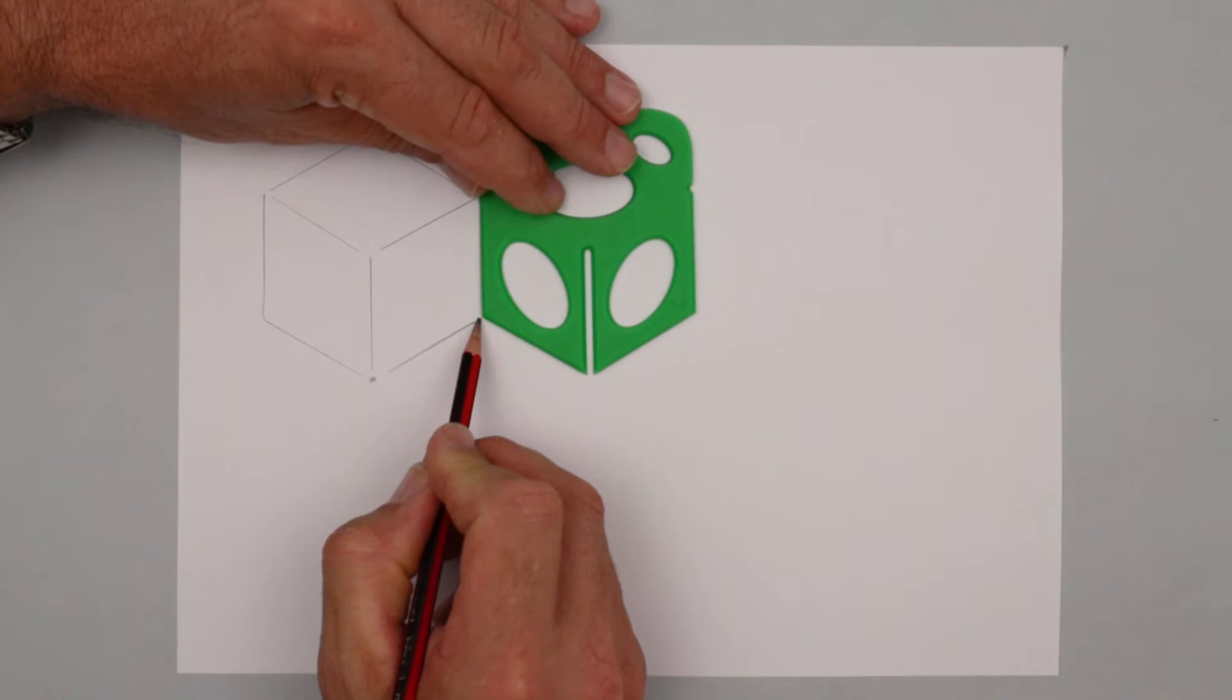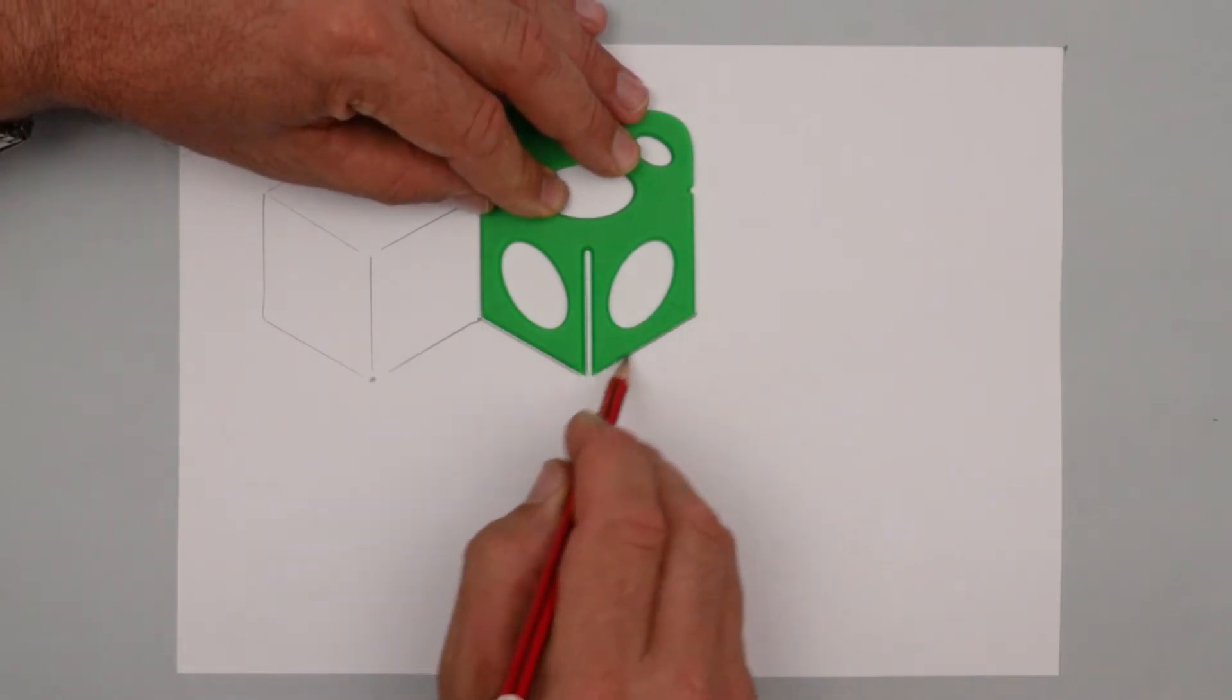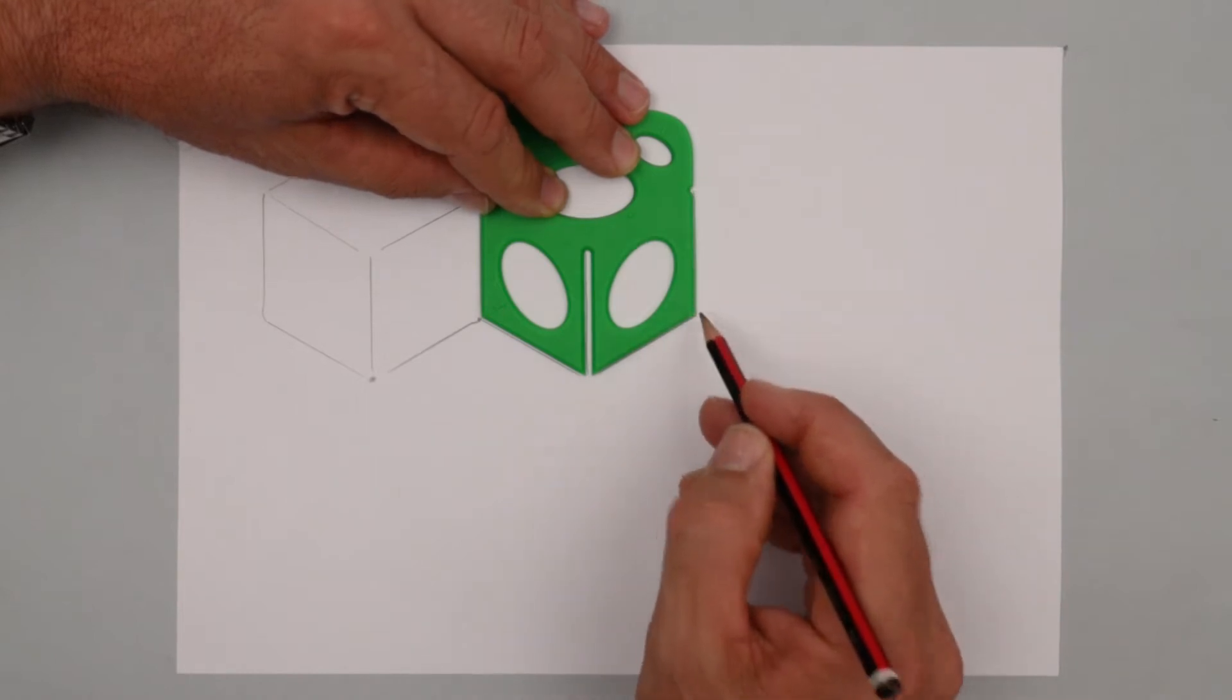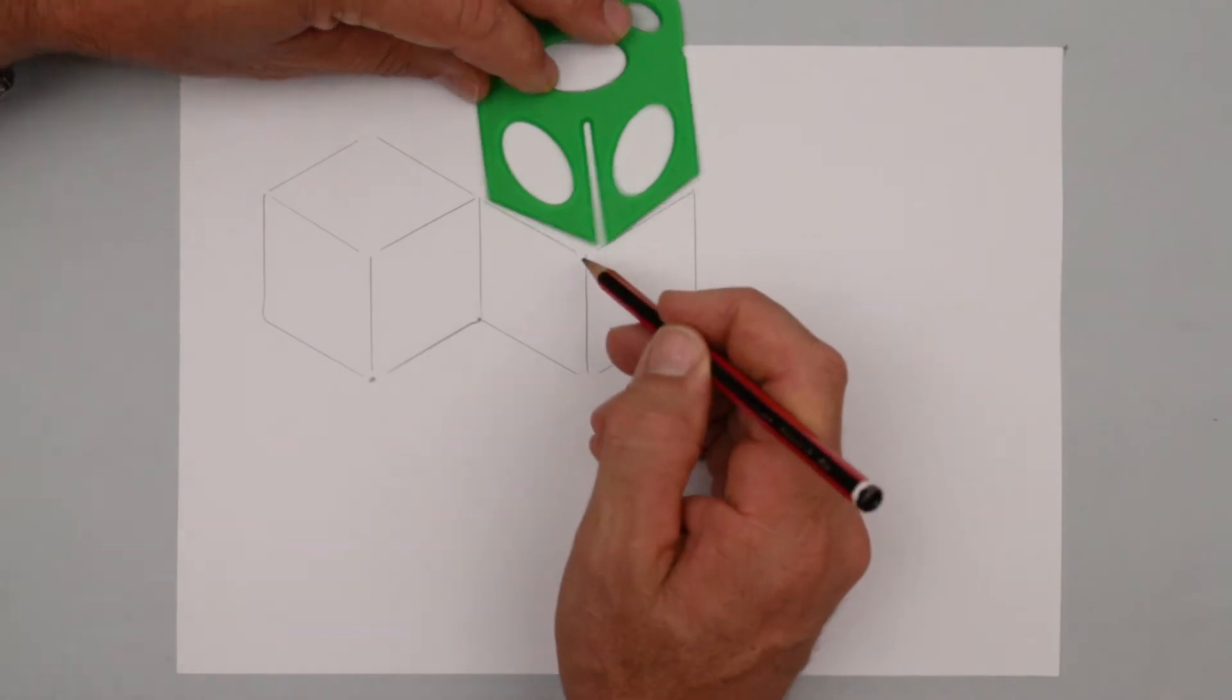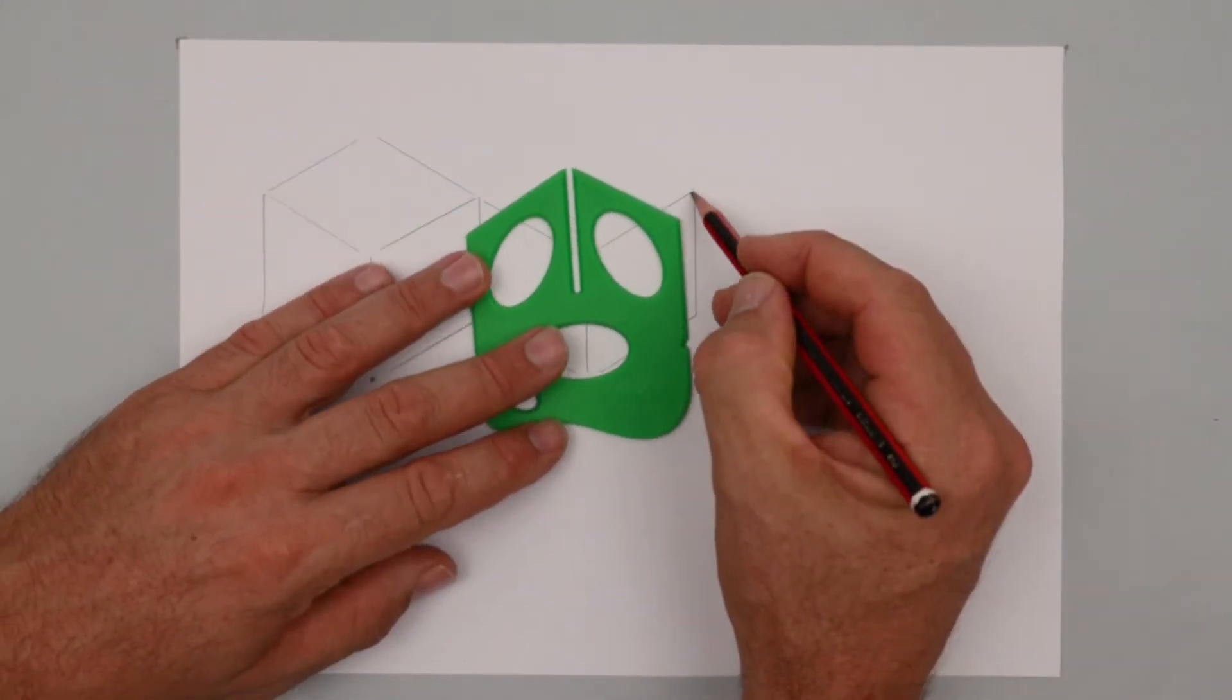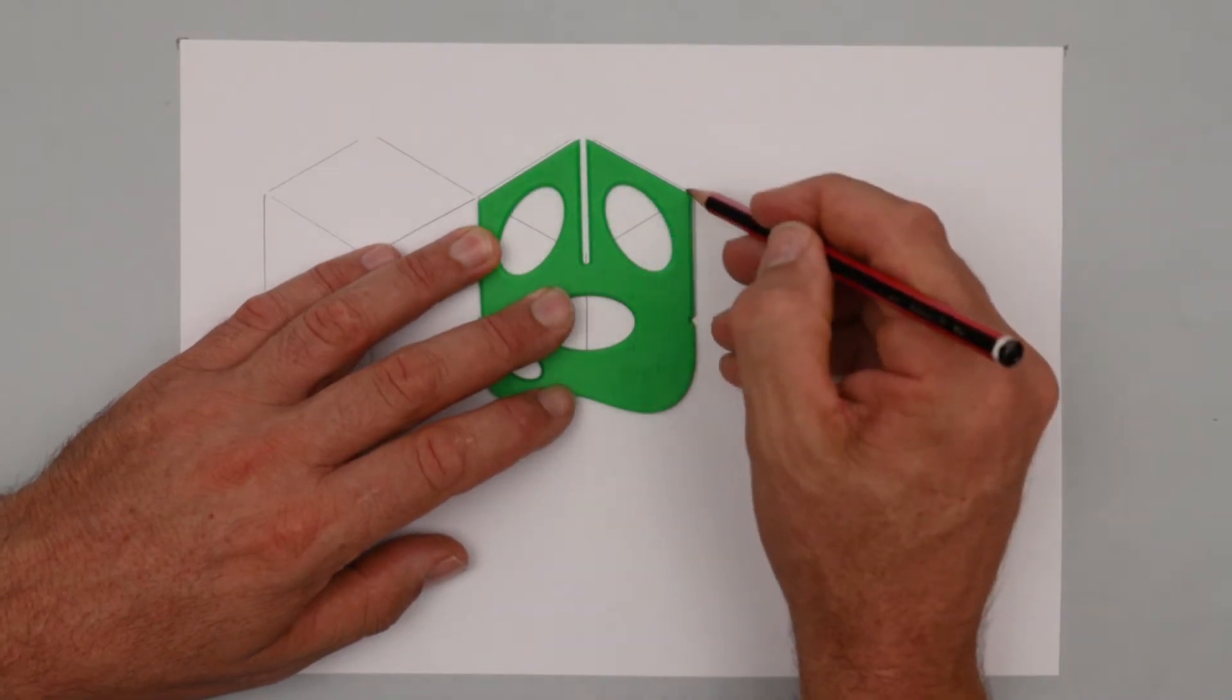Now we're going to draw another cube right beside it. Notice how I'm touching the edge of the splat on the other drawing so the corners will be touching. Great. That's going to be what we'll base our design around. Two cubes.